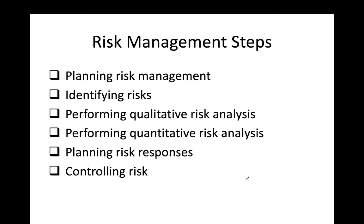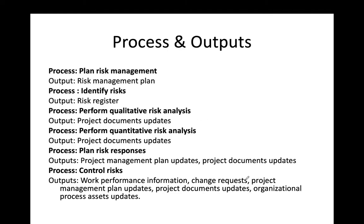There are six risk management steps, found on page 431 of Chapter 11. These steps are: planning risk management, identifying risk, performing qualitative risk analysis, performing quantitative risk analysis, planning risk responses, and controlling risk. Let's go through them one by one.